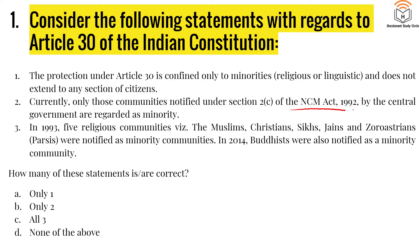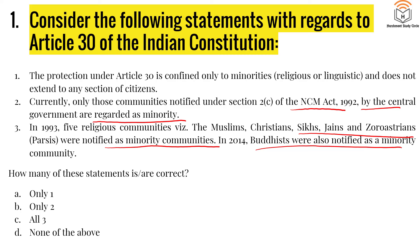Third: in 1993, five religious minorities — Muslims, Christians, Sikhs, Jains, and Zoroastrians — were notified as minority communities. In 2014, Buddhists were also notified as a minority community. How many of these statements are correct? This is an important question because Article 29 and Article 30 are continuously and very frequently asked by UPSC in both prelims and mains examinations.